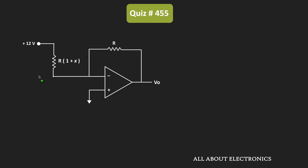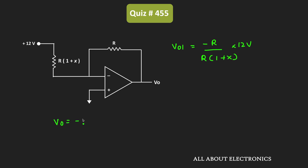Looking at the equivalent circuit, let's say the output voltage is Vo1 — the output when only plus 12V is acting alone. This output voltage Vo1 can be given as minus R divided by R times (1 plus X), times 12V. For the inverting configuration, the output is minus RF divided by R1 times the input voltage. So Vo1 equals minus 12 divided by (1 plus X).